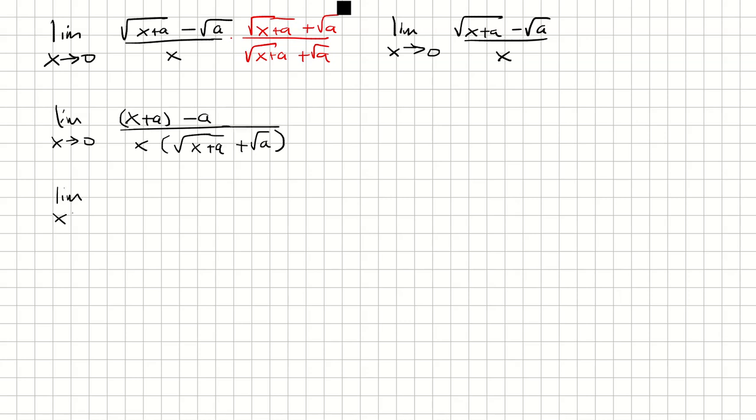The a's are going to cancel. I'm left with x on the top and then x times the quantity square root of x plus a plus square root of a. The x's are going to cancel. Now I can plug in x equals 0 and end up with 1 over 2 square root of a.